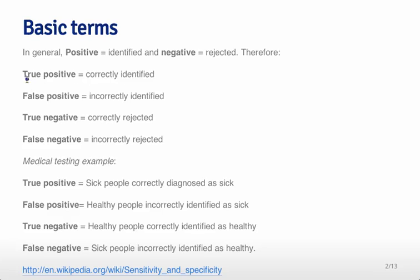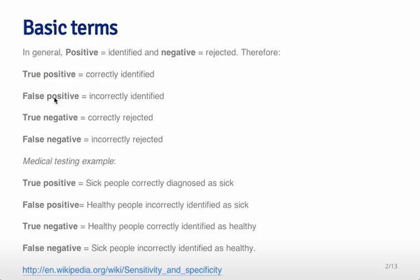As an example, a true positive means the truth is that it was something to identify — a positive. In other words, we actually identified you as belonging to that class. For a false positive, the positive part refers to the fact that we identified you as being part of the positive class, and false refers to the fact that we were wrong — we didn't actually classify you to the correct class.